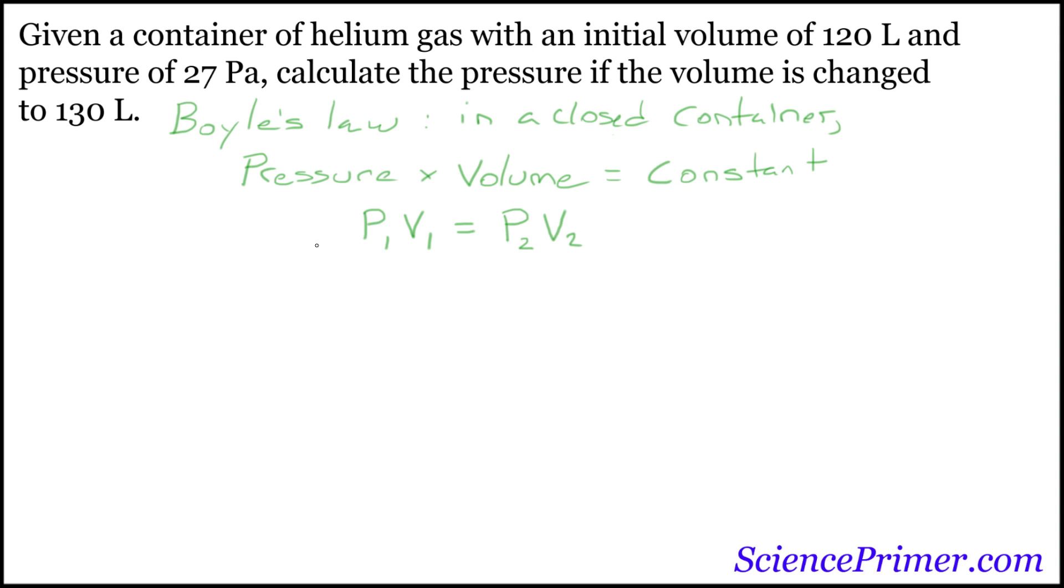So let's go back up to the question and figure out what kind of information we have. We have an initial volume, 120 liters, so this will be v1, and an initial pressure, 27 pascals, so we'll call this p1. We're asked to calculate the pressure, so we need to find an unknown pressure, so this is p2, a new pressure, and the volume is changed to 130 liters, so the volume will be v2.